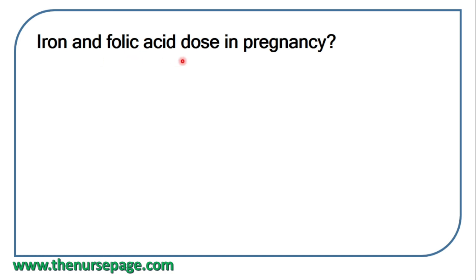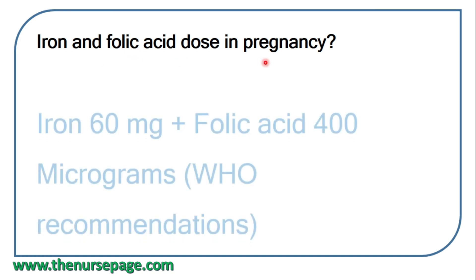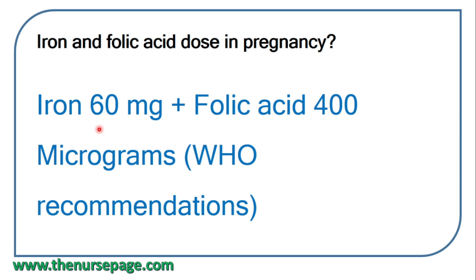Iron and folic acid dose in pregnancy: as per WHO recommendation, iron 60 mg plus folic acid 400 micrograms. The WHO recommends 30 to 60 mg of iron and 400 micrograms of folic acid.